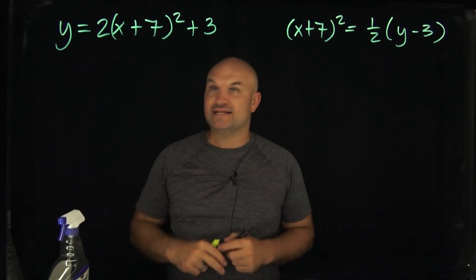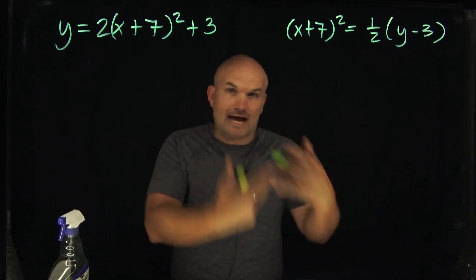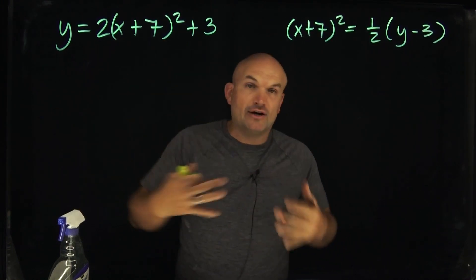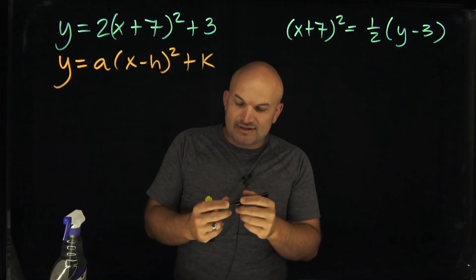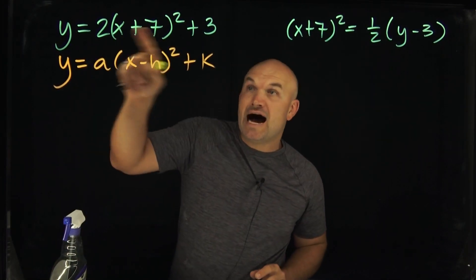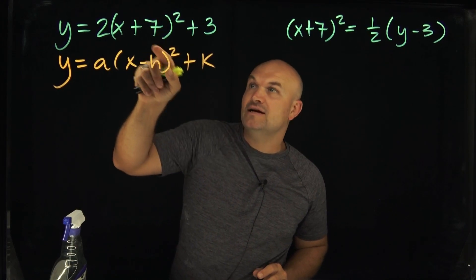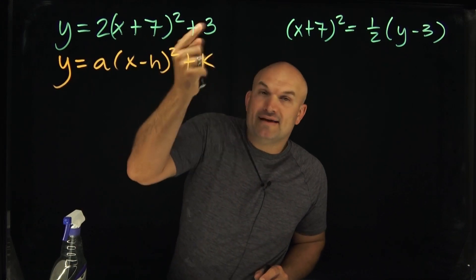In this case, you can see I have a parabola in vertex form. Most students in Algebra 2 are going to remember the general or vertex form of a parabola. Most students are able to identify the vertex as the opposite of whatever's inside the parentheses. So in this case, it'd be negative 7 and then k, which would be 3.